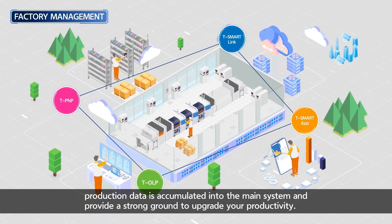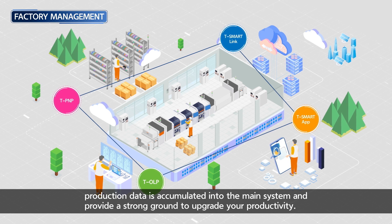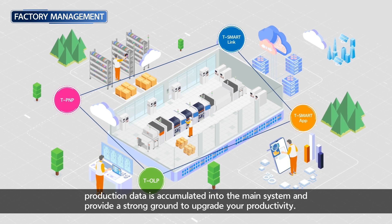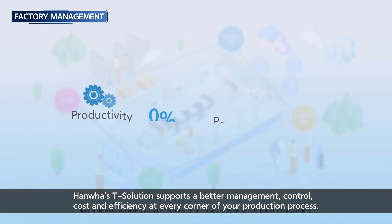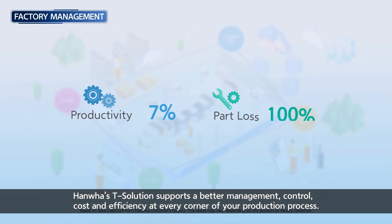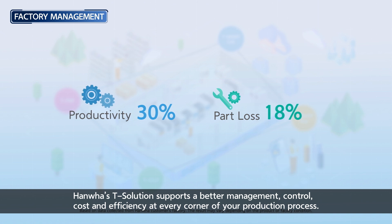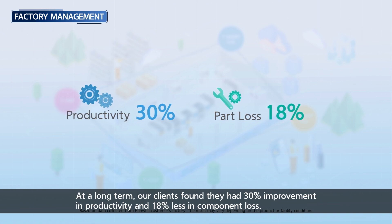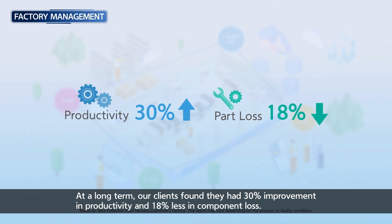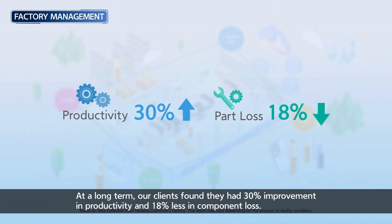These capabilities become the basis to upgrade your productivity. Hanwha's T-Solution supports better management, control, cost, and efficiency at every corner of your production process. In the long term, our clients found a 30% improvement in productivity and 18% less component loss.